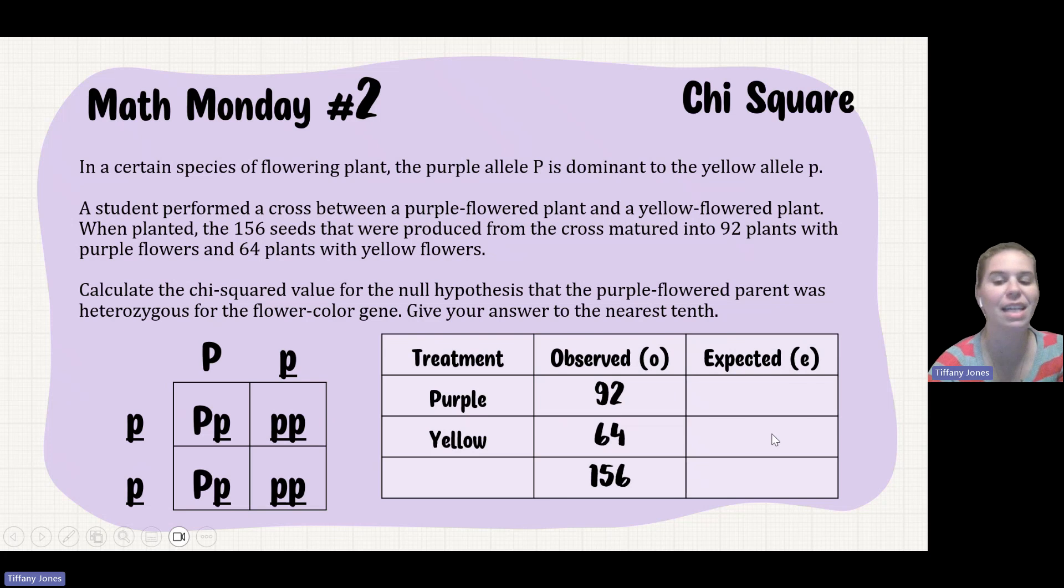And the same thing for my yellow. 50% of them would be yellow. So 156 times 0.5, or 156 divided by 2, or times one-half, however you want to do the math, would give us 78.